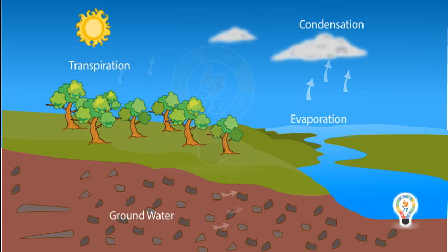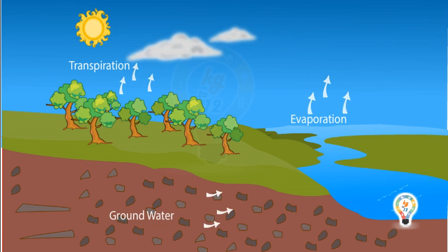As the clouds get cooled further, more water droplets unite together and the clouds become heavy and fall on the earth as rain.